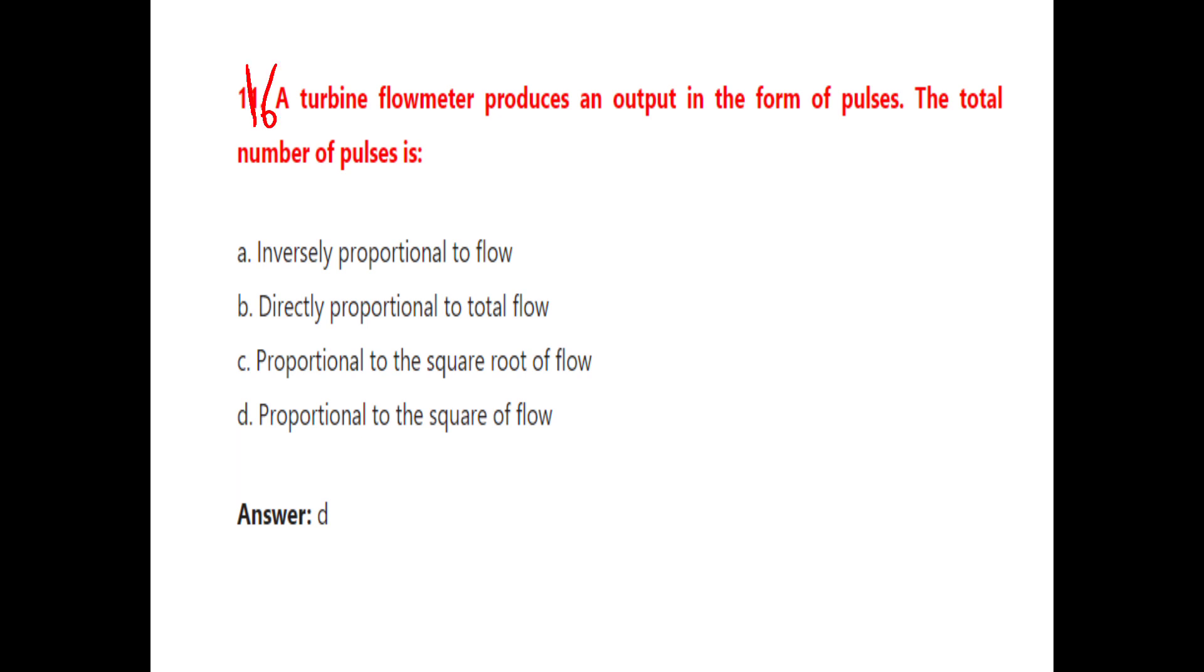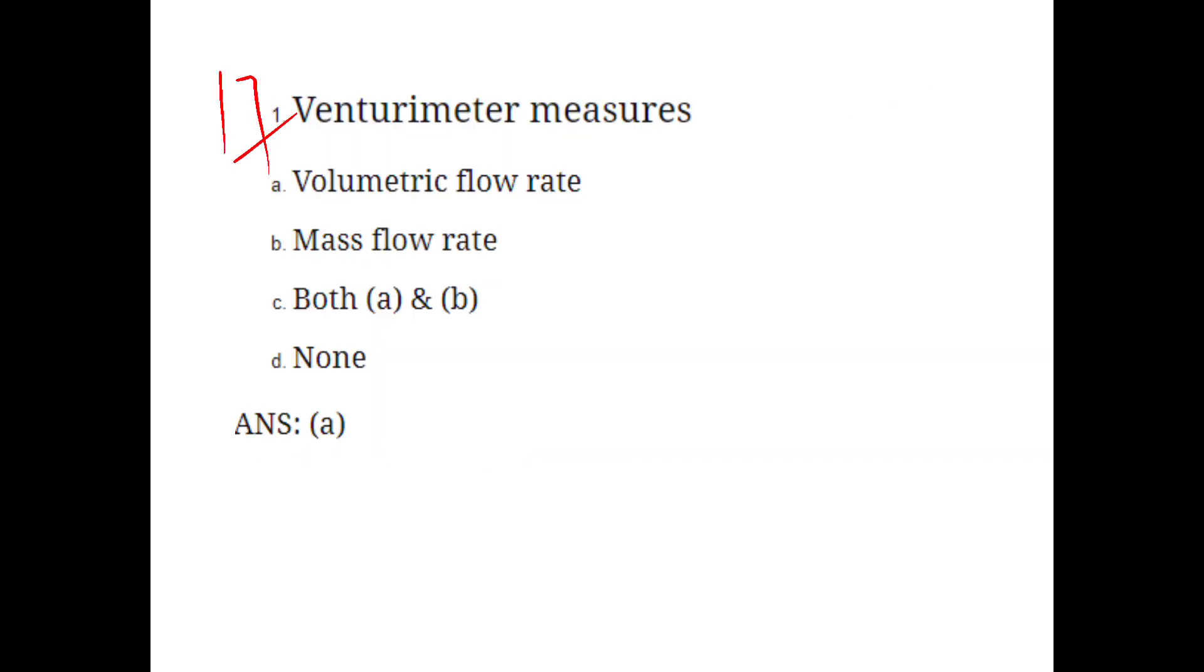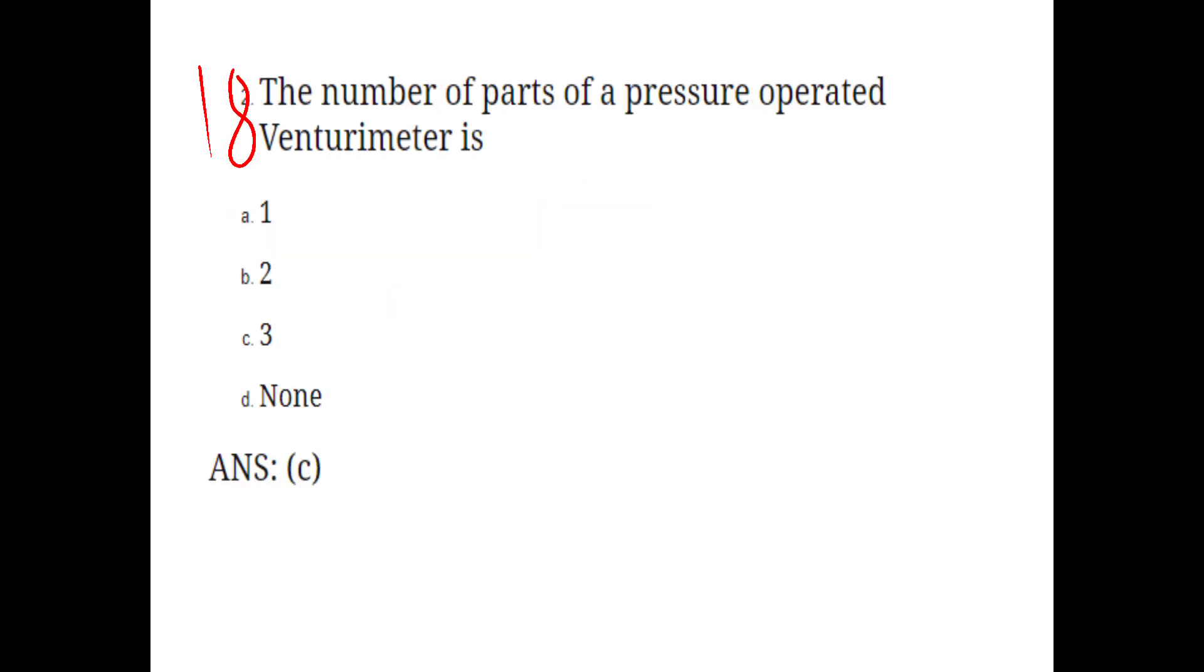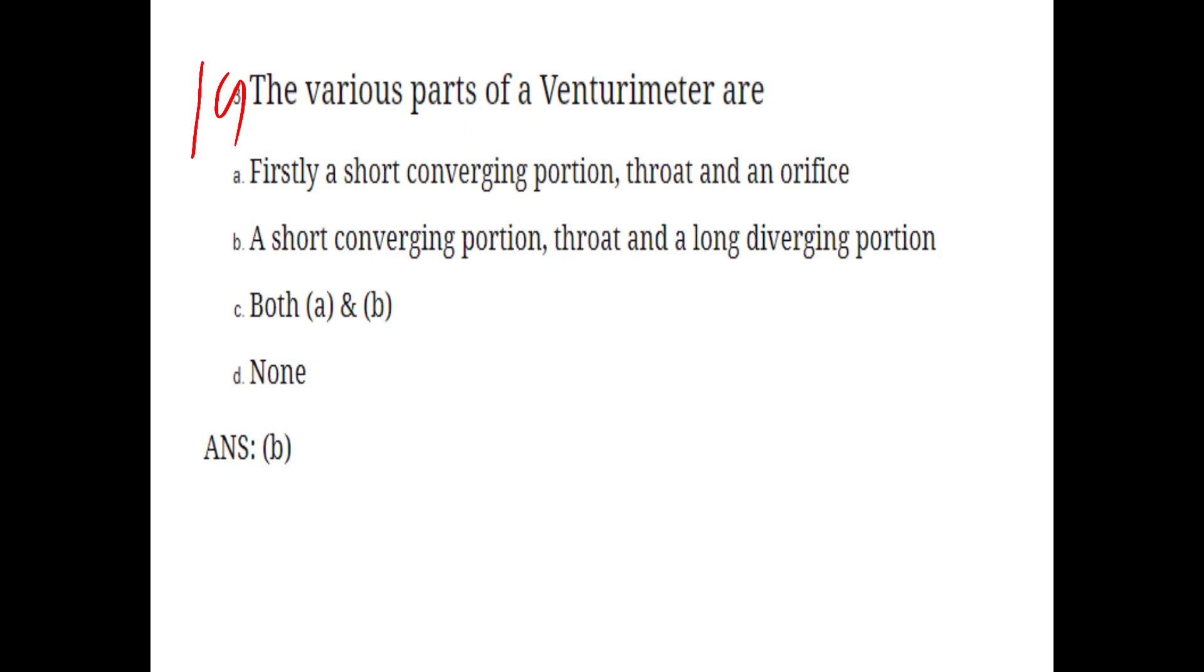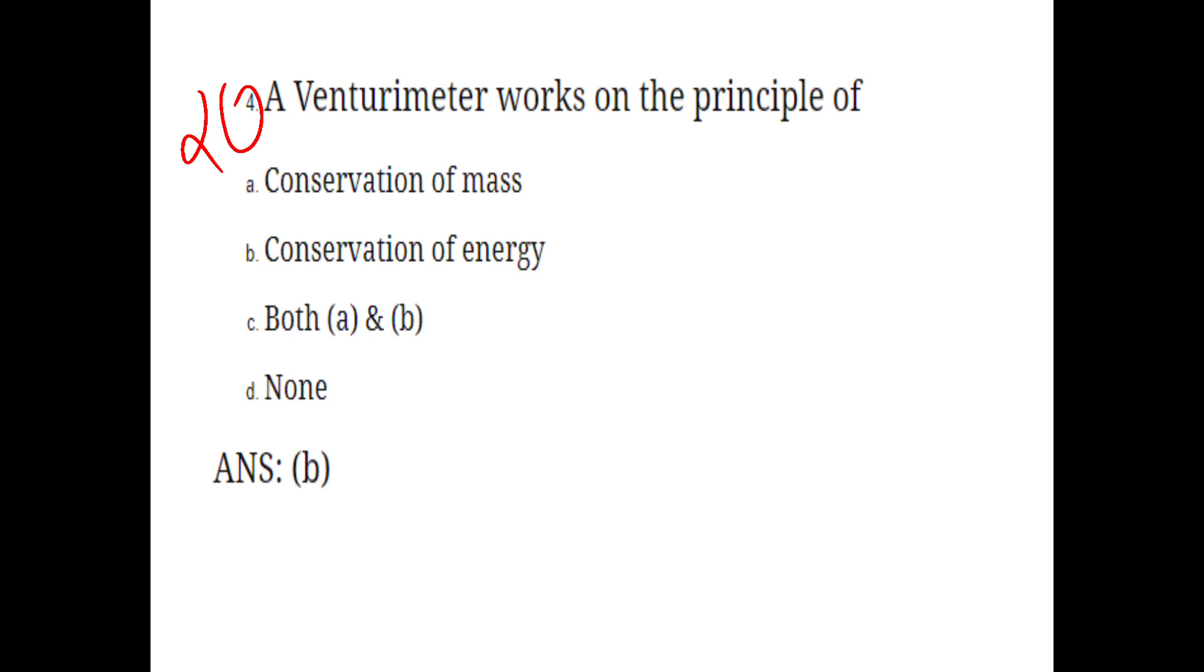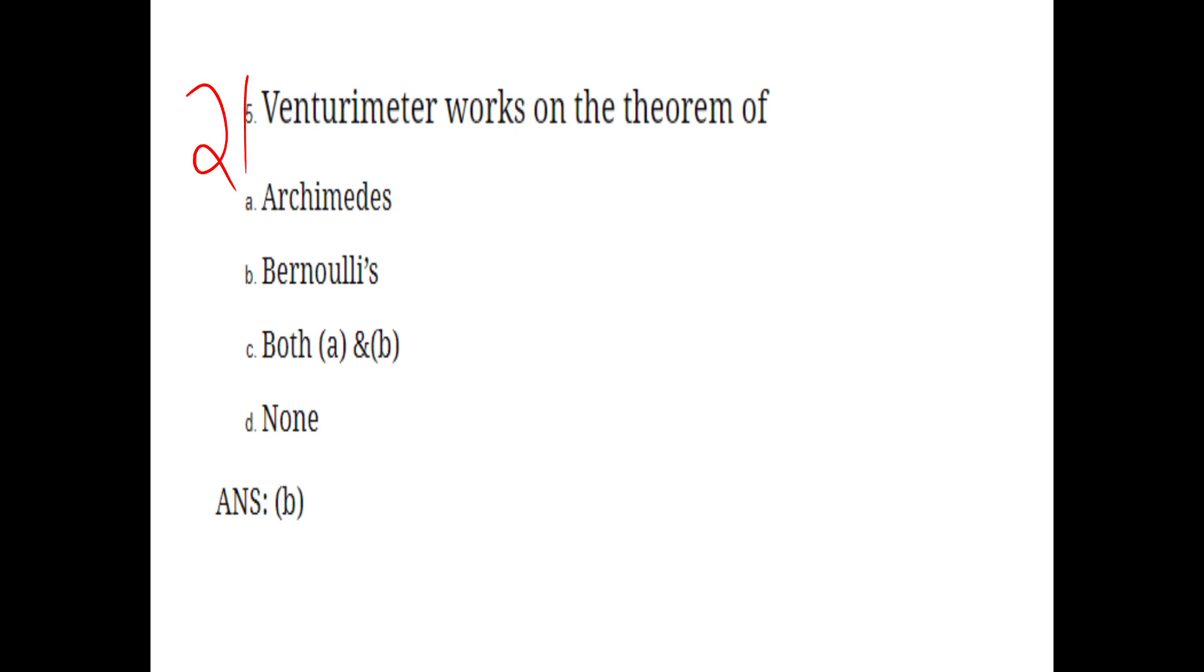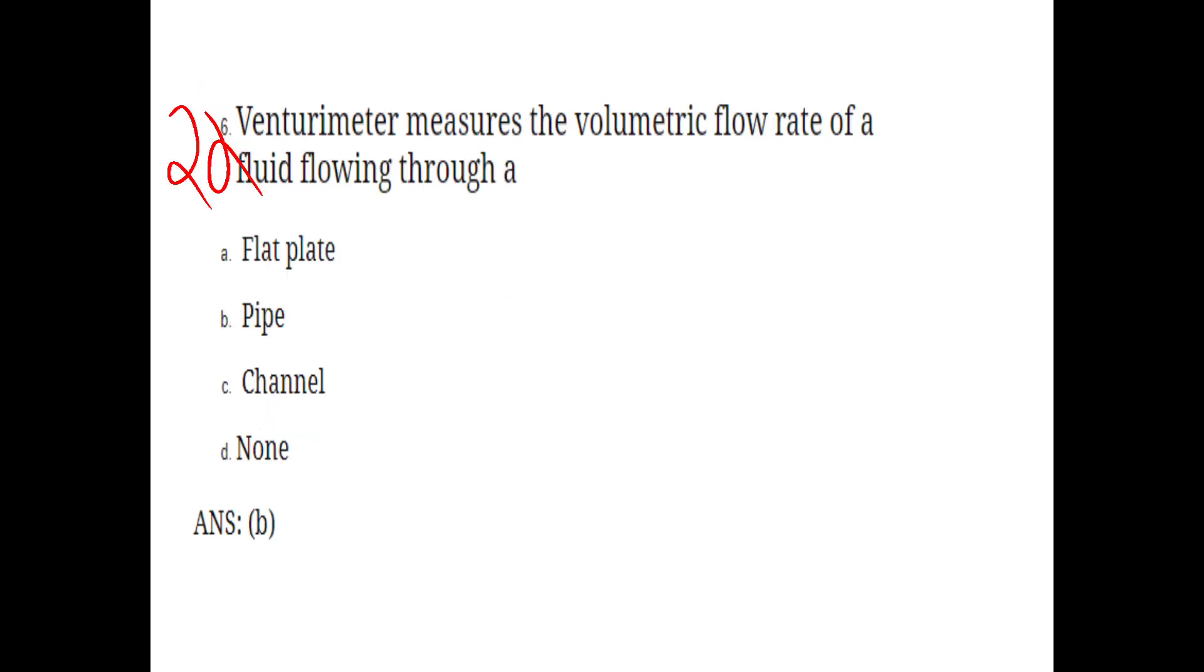A turbine flow meter produces an output in the form of pulses. The total number of pulses is proportional to the flow. Venturi meter mainly consists of a short converging portion, a throat, and a very long diverging portion. Venturi meter works on the principle of conservation of energy and Bernoulli's theorem. Venturi meter measures the volumetric flow rate of a fluid flowing through a pipe.